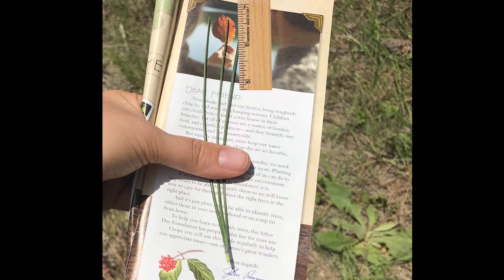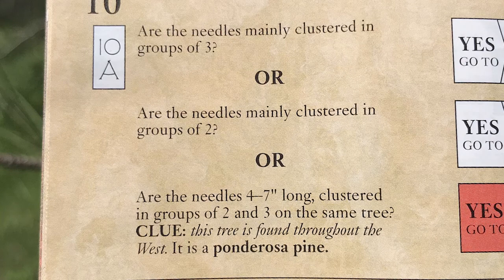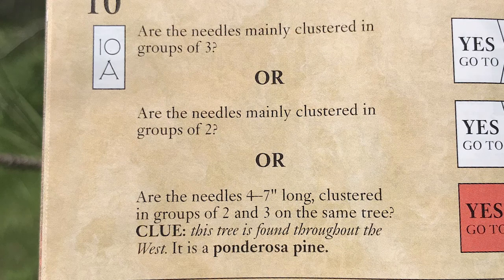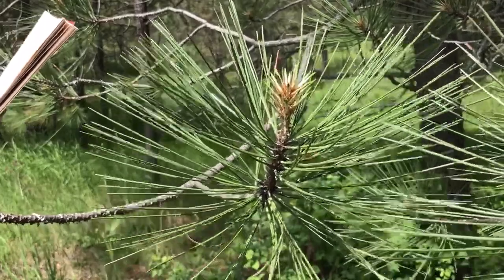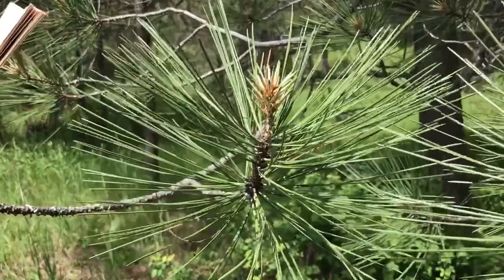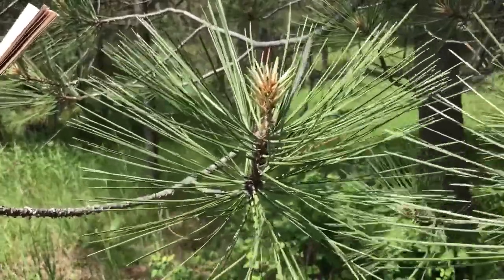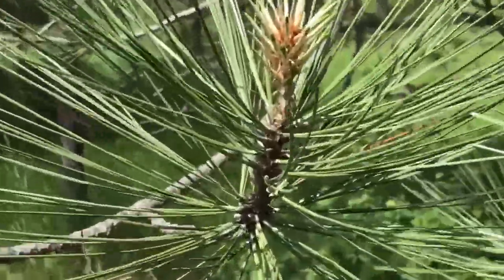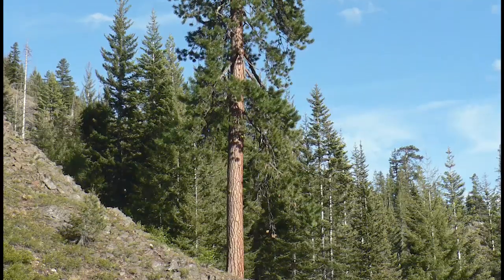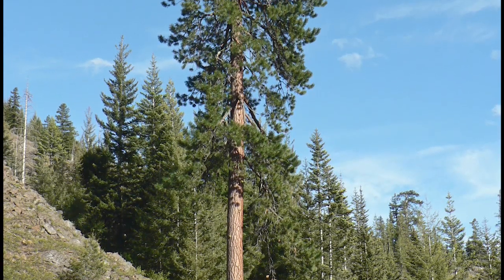Let's move to 10A. 10A: Are the needles mainly clustered in groups of 3? Or are the needles mainly clustered in groups of 2? Or are the needles 4 to 7 inches long, clustered in groups of 2 to 3 on the same tree? If we just read the first one, we may have stopped there, but we can see that description 3 better describes our tree. 11A: Ponderosa pine.